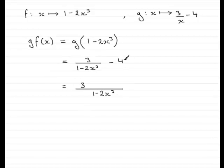But for the 4, I need to multiply top and bottom by 1 minus 2x cubed in order to get an equivalent fraction. So I would have minus 4 multiplied by 1 minus 2x cubed.